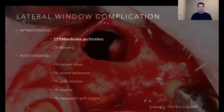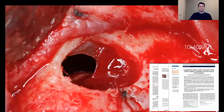This procedure is very predictable, but it is not immune to complications. The most common intraoperative complication is membrane perforation. As shown in a study from Zijderveld in 2008, 11% of complications involved membrane perforation. Intraoperatively we can also see bleeding, and postoperatively we can see implant failure, bone resorption, graft infection, sinusitis, and inadequate graft volume. Perforation happens between 10 to 14% according to the literature.